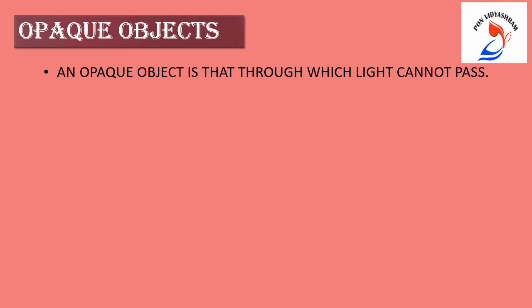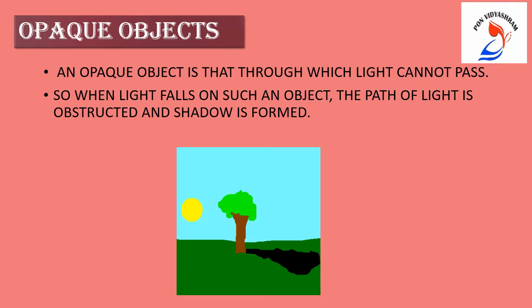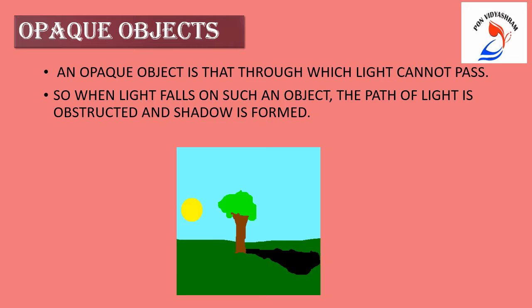Opaque objects. An opaque object is one through which light cannot pass. So, when light falls on such an object, the path of light is obstructed and a shadow is formed. Children, see this picture — what do you observe? When sunlight falls on the tree, the tree, being an opaque object, forms a shadow by blocking the sunlight.